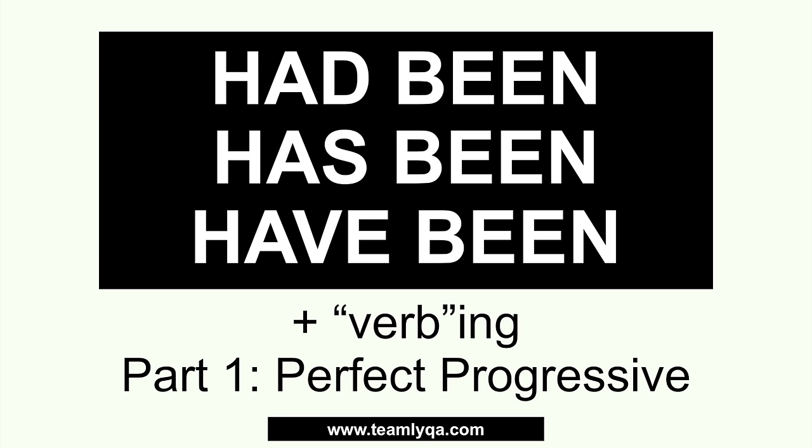We're going to talk about the difference between had-been, has-been, and have-been. These are the perfect progressive tenses — either present progressive or past progressive. There are other outlier rules regarding travel and passive voice, but we won't cover those today. This is the focus because it's the most fundamental building block. If you've got a good handle on this topic, the rest you can pick up really easily.